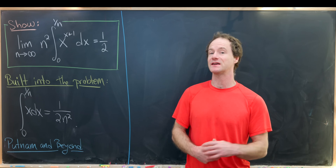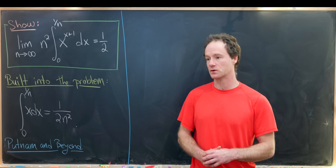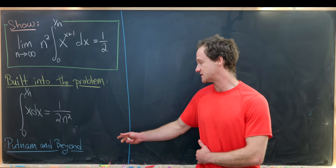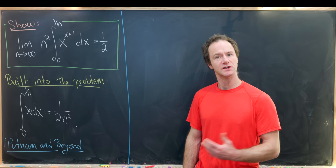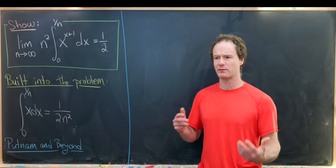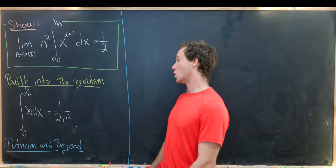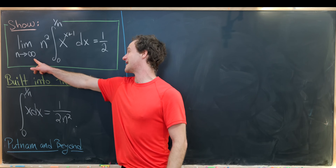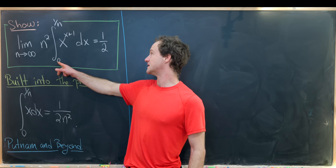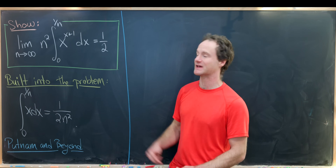Here I've got a problem that looks a lot like something I would give as a homework problem in a real analysis course. I've seen this problem in various locations, but maybe the most famous is the book 'The Putnam and Beyond,' which has a good chapter on real analysis as it applies to problem solving and competition mathematics. Our goal is to show that the limit as n goes to infinity of n squared times the integral from 0 to 1/n of x^(x+1) dx is equal to 1/2.